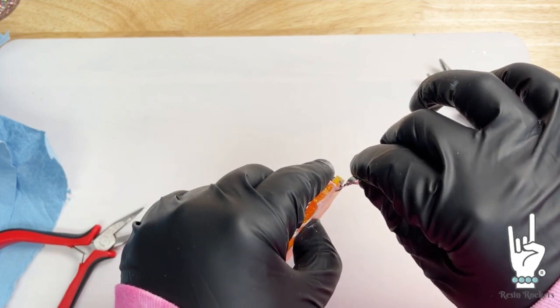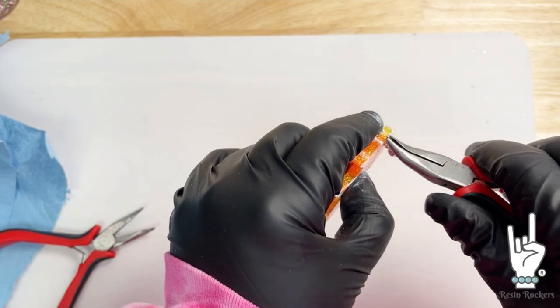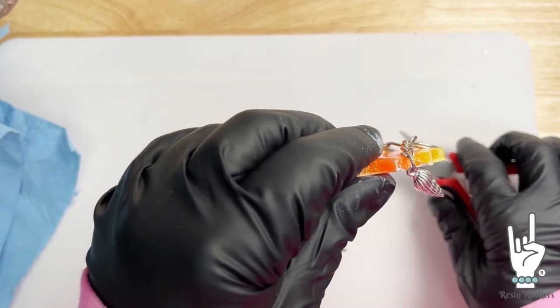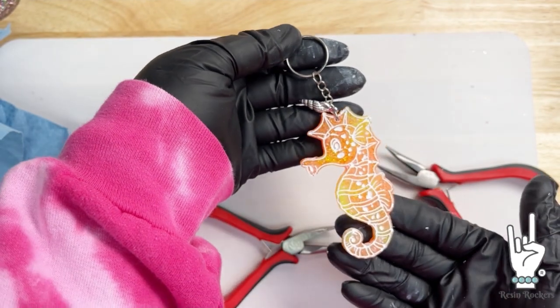That's where I like to have it because you can see it better. So we're going to put on our charm toward the front there, add our keychain to the back, put those edges of the jump ring together. I give them a little squeeze there at the end. And then there is your seahorse keychain.